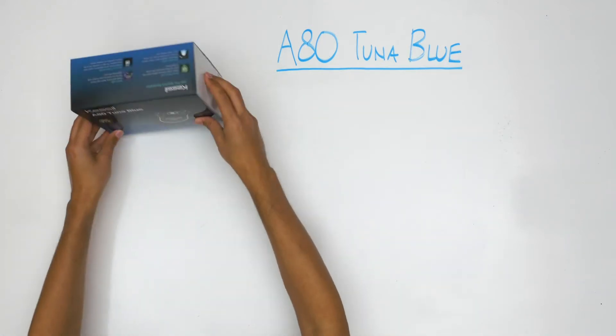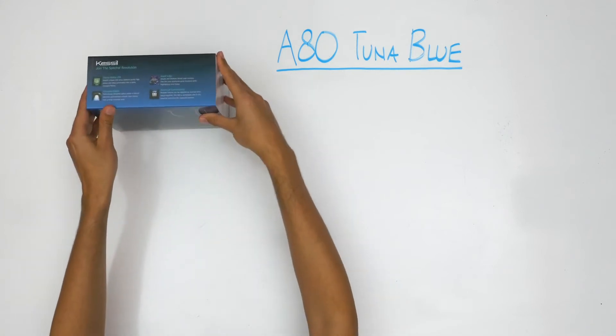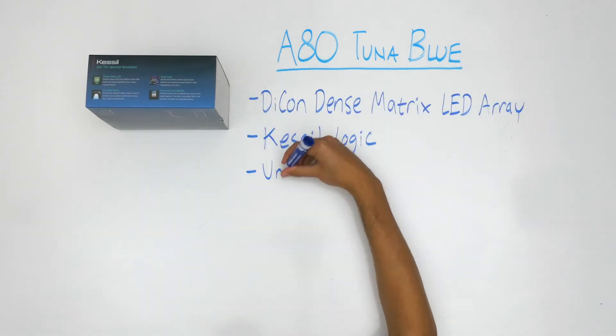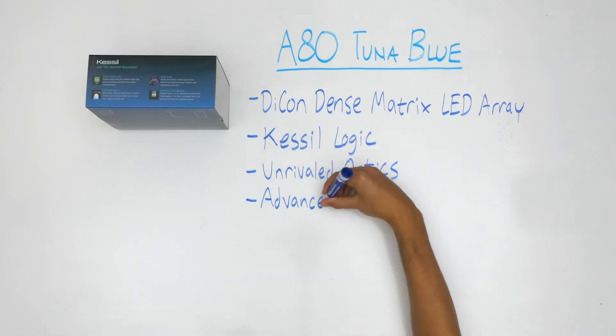In addition, the side of the box shows us the features which make the A80 Tuna Blue one of the best aquarium lights on the market. Daikon's dense matrix LED array, Kessel logic, unrivaled optics, and advanced controllability.